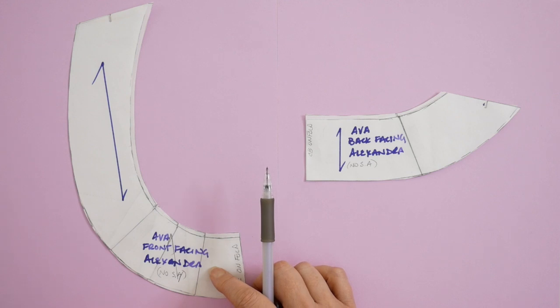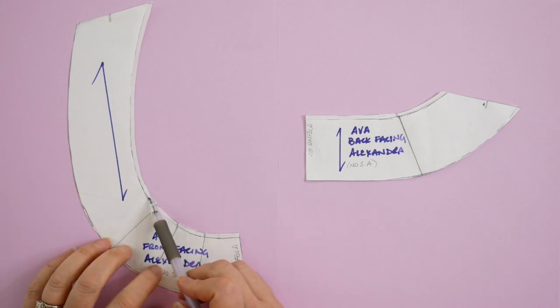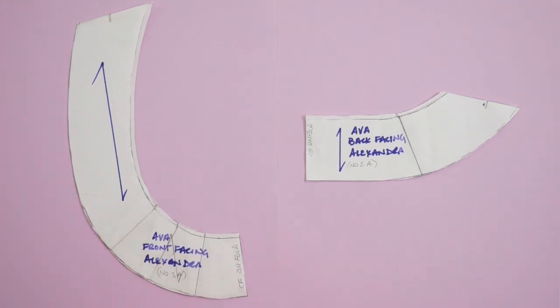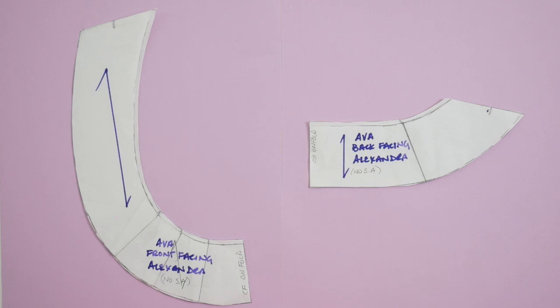You'll notice that last time when I created these particular facings, I basically trimmed back the neckline facing by an eighth of an inch. The reason it was difficult to get this neckline facing into my neckline is that when you cut something back like this, it means the neckline of the neckline facing is actually larger than the actual neckline that you're sewing it to. So you have to force the two together.